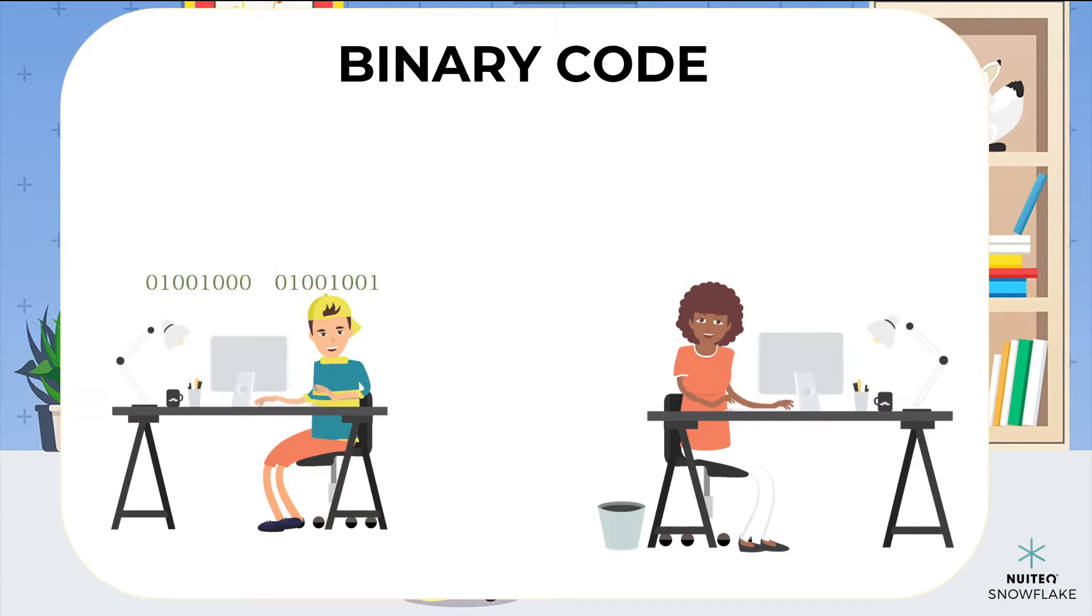Now the computer takes that information in binary form, and sends it to Laura's computer. Laura's computer then turns that binary code into text, which Laura can read in her own chat window. Nice.